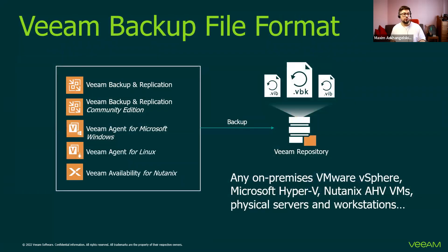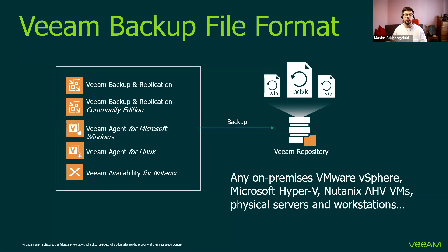One more important point I would like to highlight is the Veeam backup file format. For Veeam Backup and Replication, Veeam agents, and other Veeam products, we have a set of VBK and VIB files. If you would like to recover on premises, get these backups to your infrastructure and recover them on your own — not into the data center or service provider — you can just copy and paste these files, then import them to Veeam Backup and Replication Community Edition. No matter what size of data it is, no matter how many virtual machines are there and how old they are, if you have a backup file, you can recover virtual machines, files and folders, or recover to public cloud directly from the free edition of Veeam Backup and Replication.